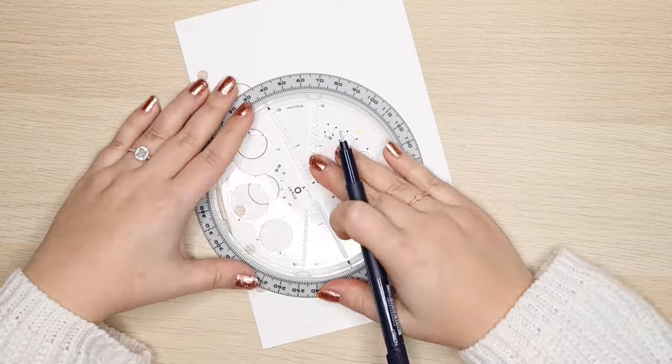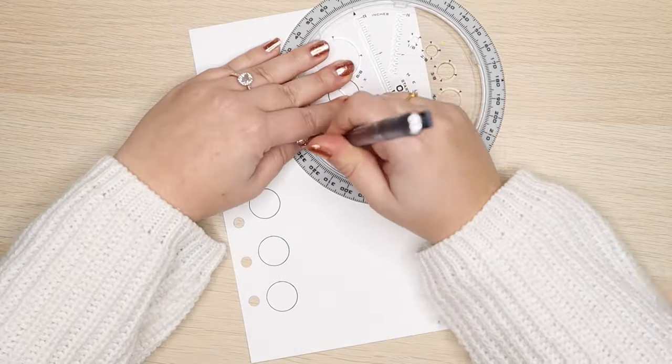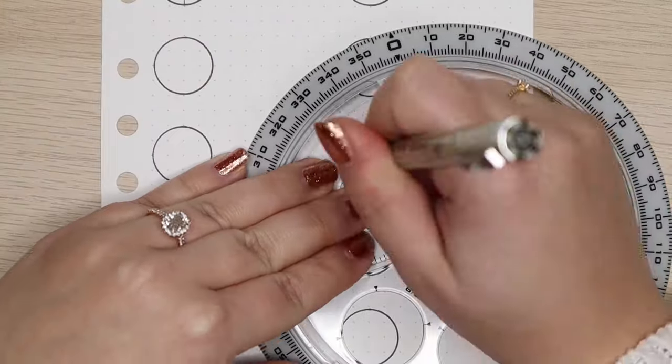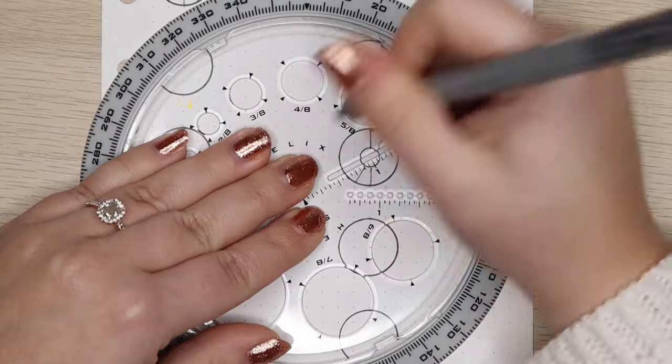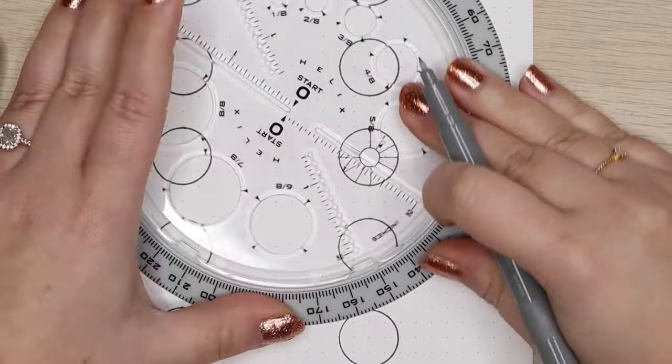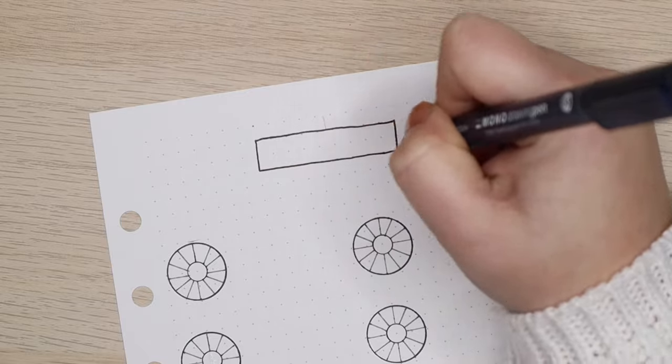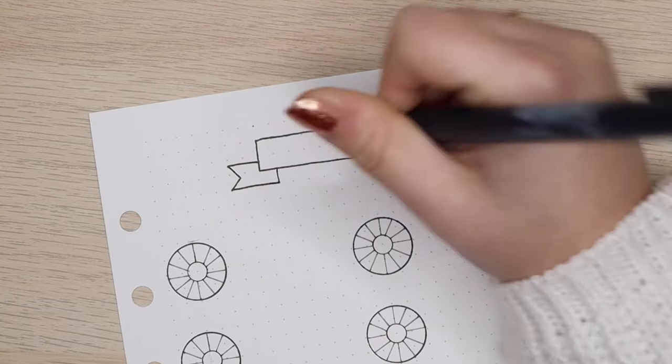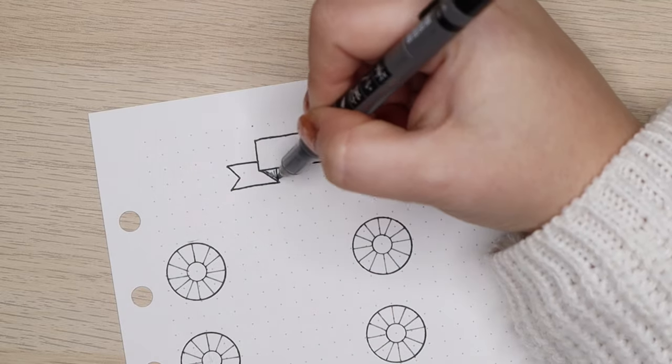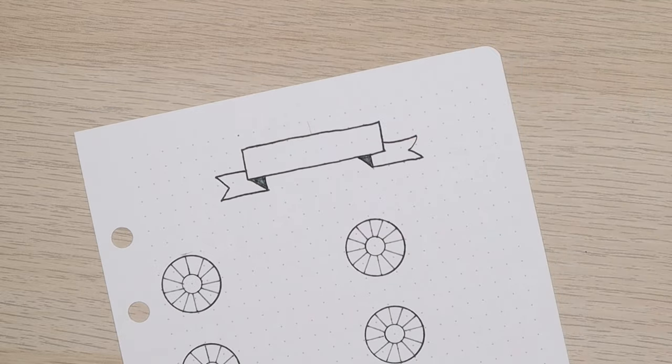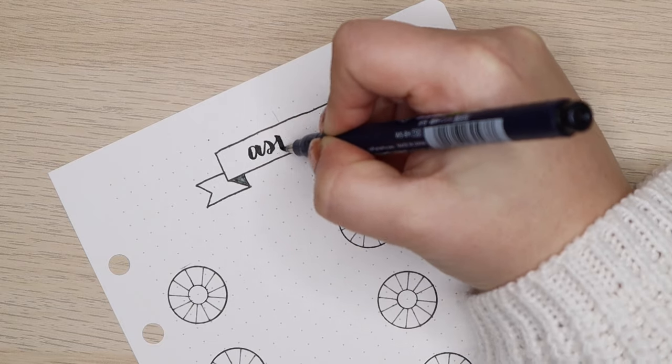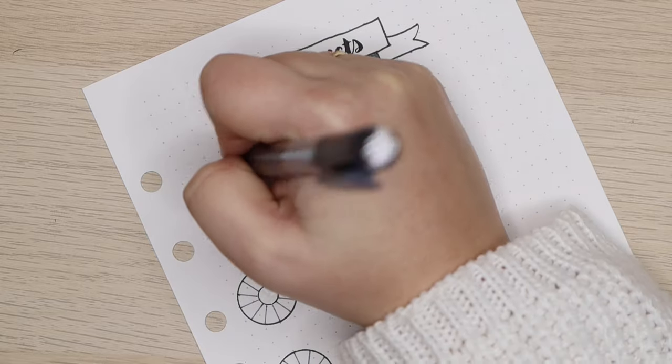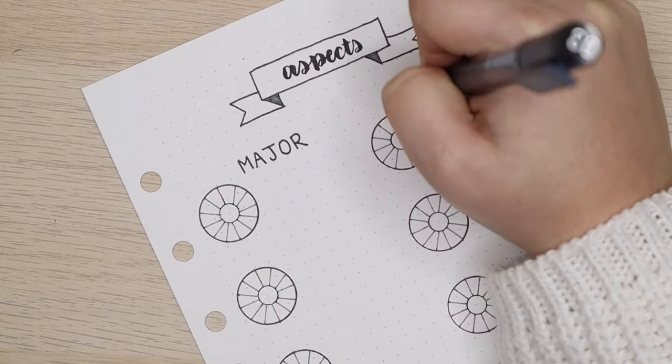This third reference spread has to do with aspects. Honestly, this is the part of astrology that I understand the least, but I still wanted to include it so that as I learn more, I will have the reference for it. It also took a long time to create because I had to create 10 little circles and divide them all into 12 sections. If you are going to do this, there are plenty of other ways to represent this information.